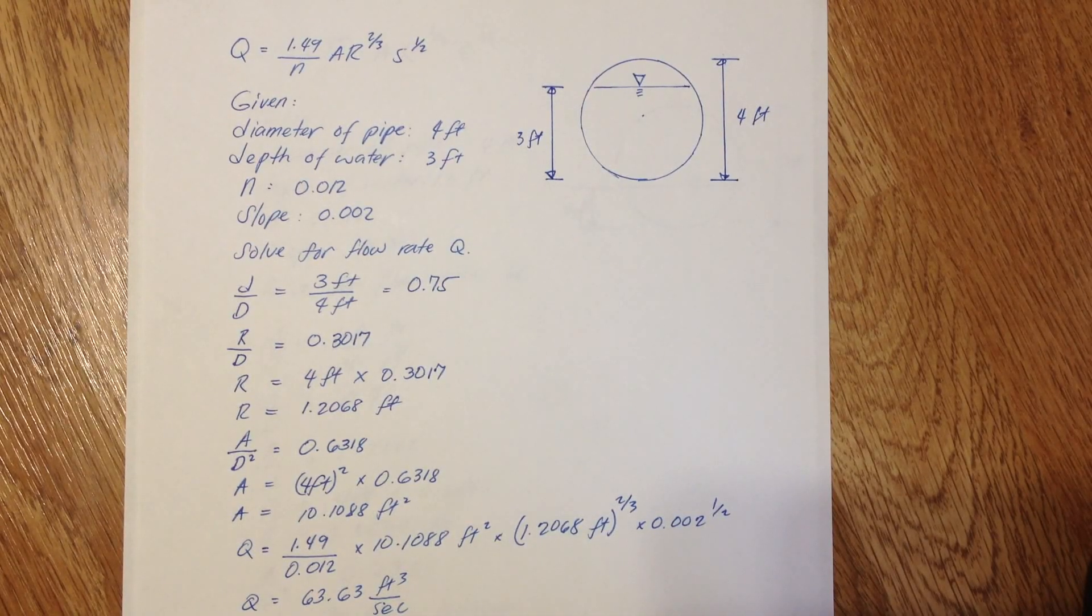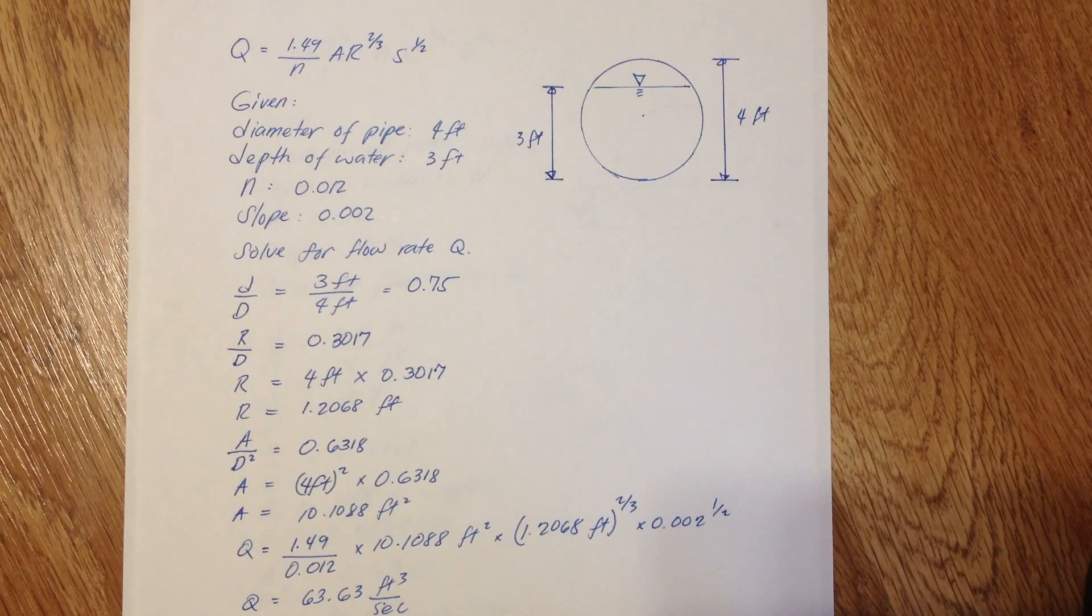Alright folks, it's time to solve a water resources problem. I have a sample problem here using the Manning equation for a circular channel flowing partially full, solving for flow rate in cubic feet per second. The given values are: diameter of the pipe 4 feet, depth of water 3 feet, Manning's roughness coefficient 0.012, and slope of the pipe 0.002 or 0.2 percent.